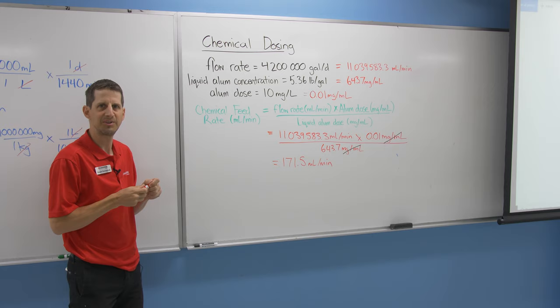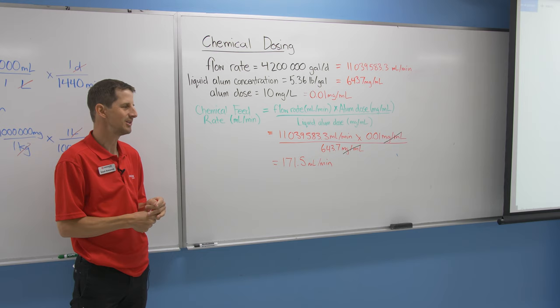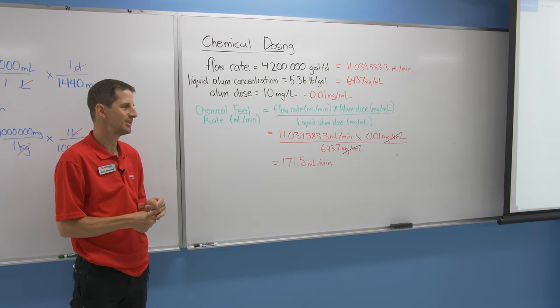So when you set up your dosing pump, whether it's a prominent pump, peristaltic, or what have you, this is what you're going to calibrate that unit to. Make sure you're dosing that amount from your batch tank for your coagulant. That's it. Thank you very much.